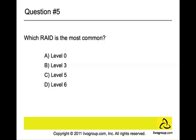Question number five. Which RAID is the most common? Is it level 0, level 3, level 5, or level 6? The answer is level 5. Level 5 is block level stripping with distributed parity, so it distributes parity along with the data. No single disk is devoted to parity, which can speed small writes in multiprocessing systems.